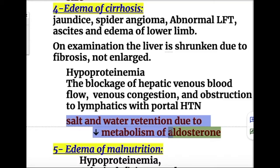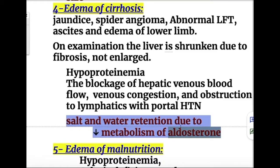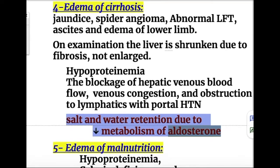Salt and water retention in cirrhosis is due to decreased metabolism of aldosterone. Aldosterone is produced by the adrenal cortex and metabolized by the liver. In liver failure it is not metabolized, so its level increases, causing edema formation and hypertension.